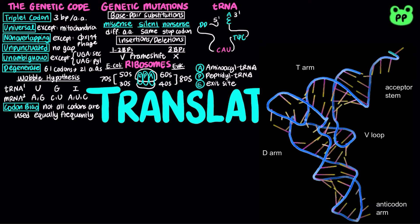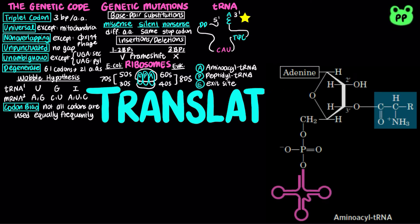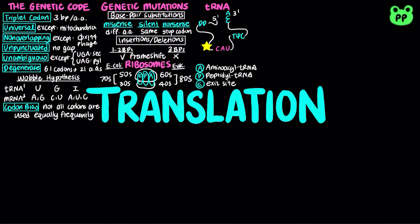Several characteristics contribute to tRNA's adapter function. The amino acid arm refers to the 3' end of tRNA, which contains the CCA sequence that can carry a specific amino acid. It is esterified via its carboxyl group to the 2' or 3' OH of the adenosine residue. The anticodon arm contains the anticodon sequence that is complementary to the mRNA codon.